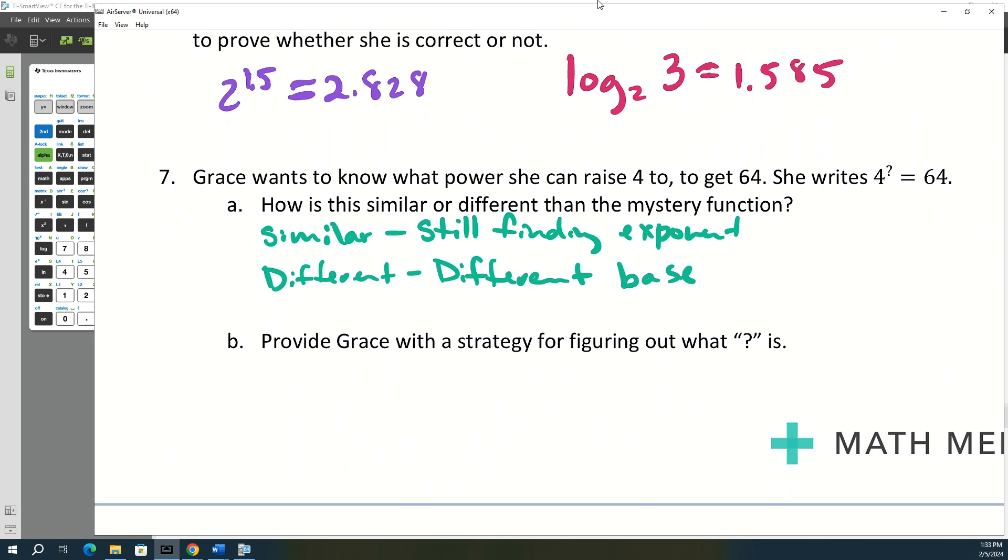All right. So if we wanted to provide Grace with a strategy, she could do a logarithm. She could do the log base 4 of 64, figure it out that way, or she could still just figure out 4 to what power gets to 64. Do you guys know? Three. Yeah, I just said plug your answers. Yeah, she could plug your answers. That's the strategy.